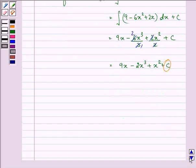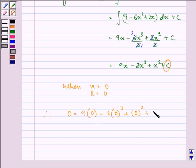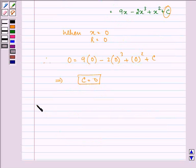Now we need to find this constant of integration. We know that when we are not producing any units, we are not earning any revenue. So when x = 0, R = 0. This means 0 = 9(0) - 2(0)³ + (0)² + C, which implies C = 0.